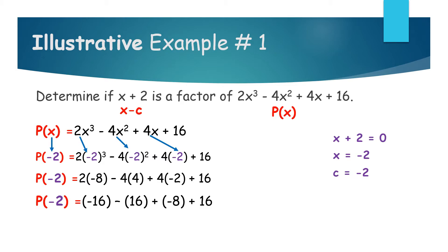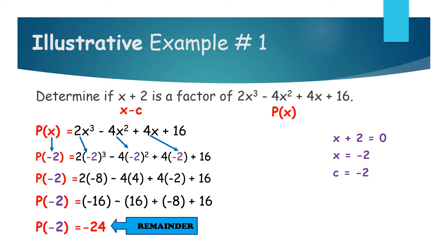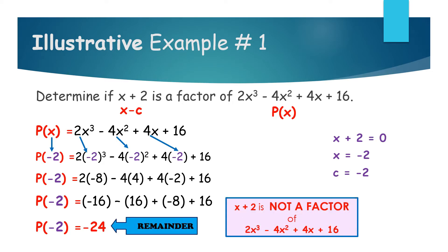Performing the additions and subtractions from left to right: negative 16 minus 16 is negative 32, plus negative 8 is negative 40, plus 16 is negative 24. So p of negative 2 equals negative 24, which is our remainder. Since this is not 0, x plus 2 is not a factor of 2x cubed minus 4x squared plus 4x plus 16.